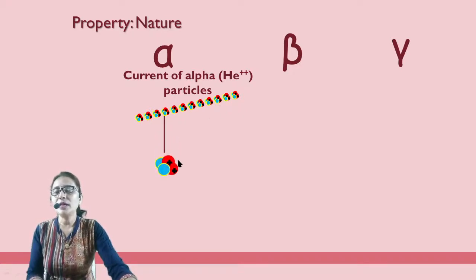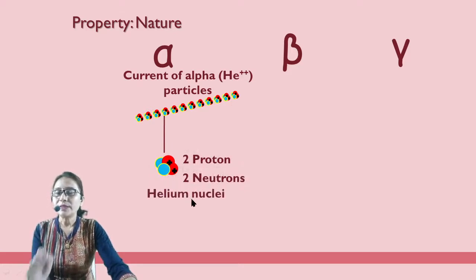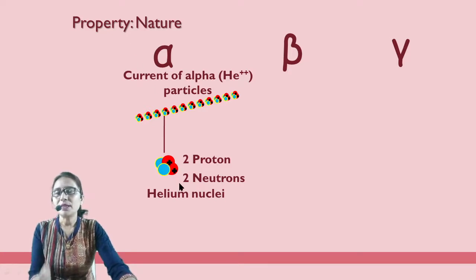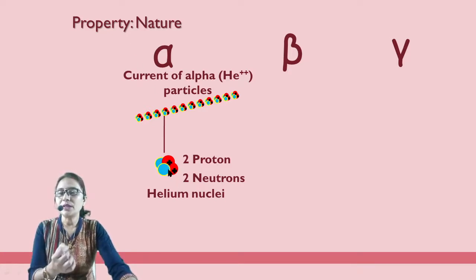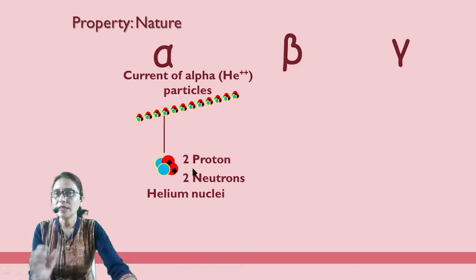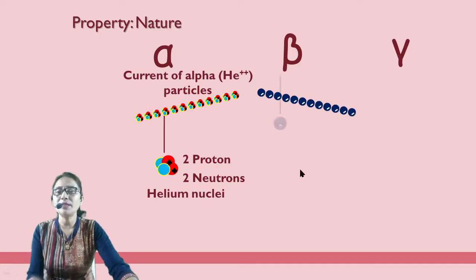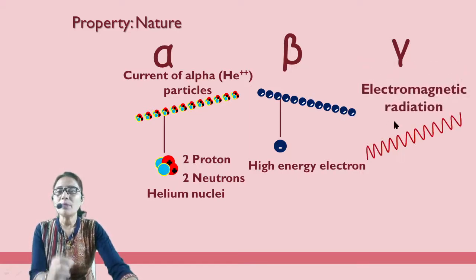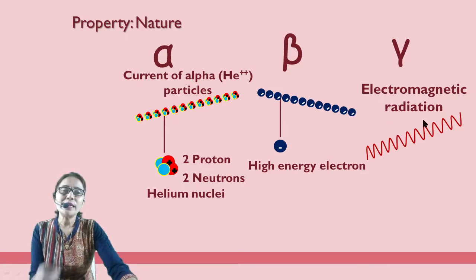If we take one alpha particle, it has two protons and two neutrons. That means it is similar to the nucleus of helium, because helium has two protons and two neutrons. Beta particle is a high-energy electron. And gamma rays are electromagnetic radiation.